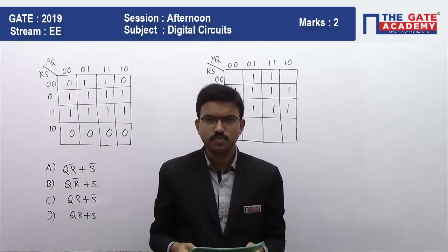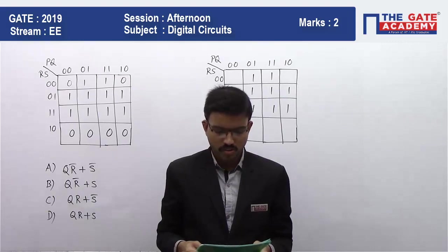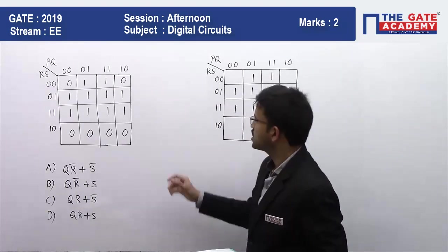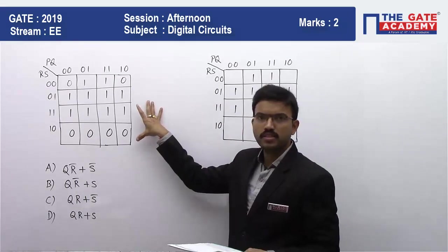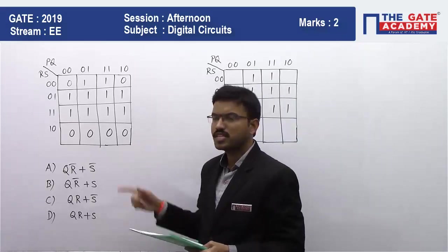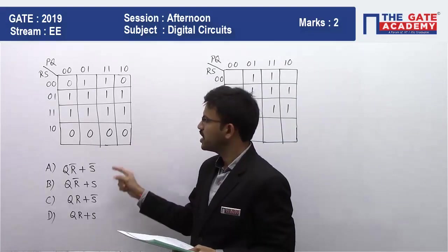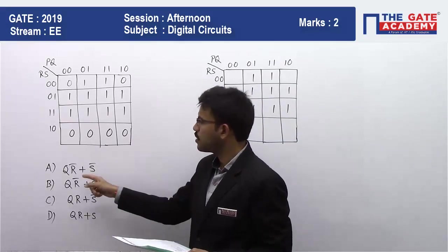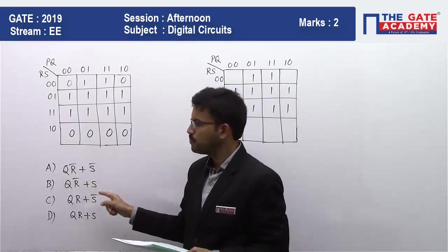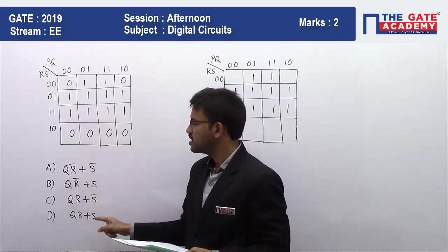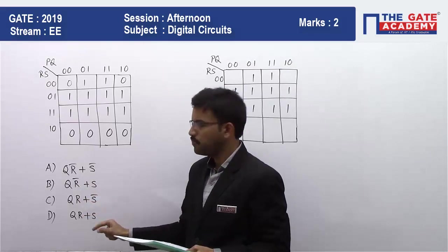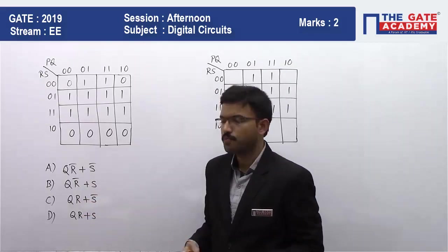Find the output expression for the K-map shown below. He has given the K-map and is asking for the output expression. The four choices are: Option A: QR-bar plus S-bar. Option B: QR-bar plus S. Option C: QR plus S-bar. Option D: QR plus S.